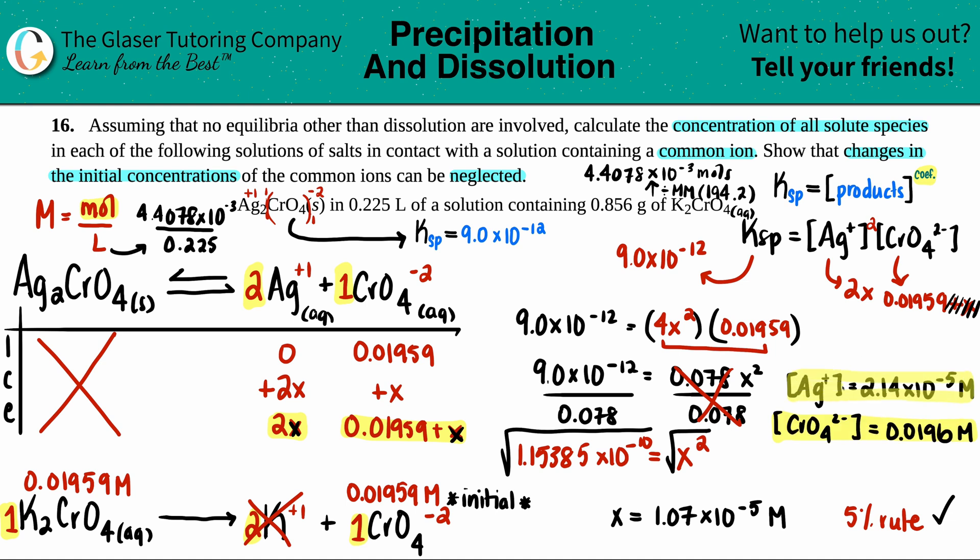These are your two answers. That's what it means to calculate all of the solute species: they wanted you to find out what those two ions were. Thank you so much for tuning in. Subscribe to the channel if you want to help us out. We're almost at 20,000 subscribers and it's all because of you guys. Have an awesome day, bye.